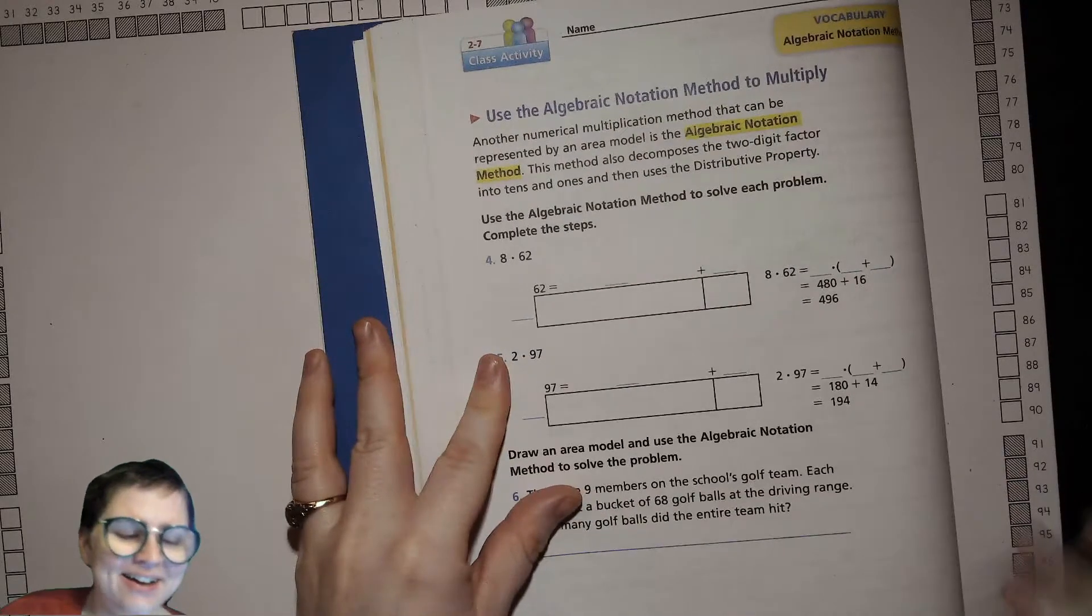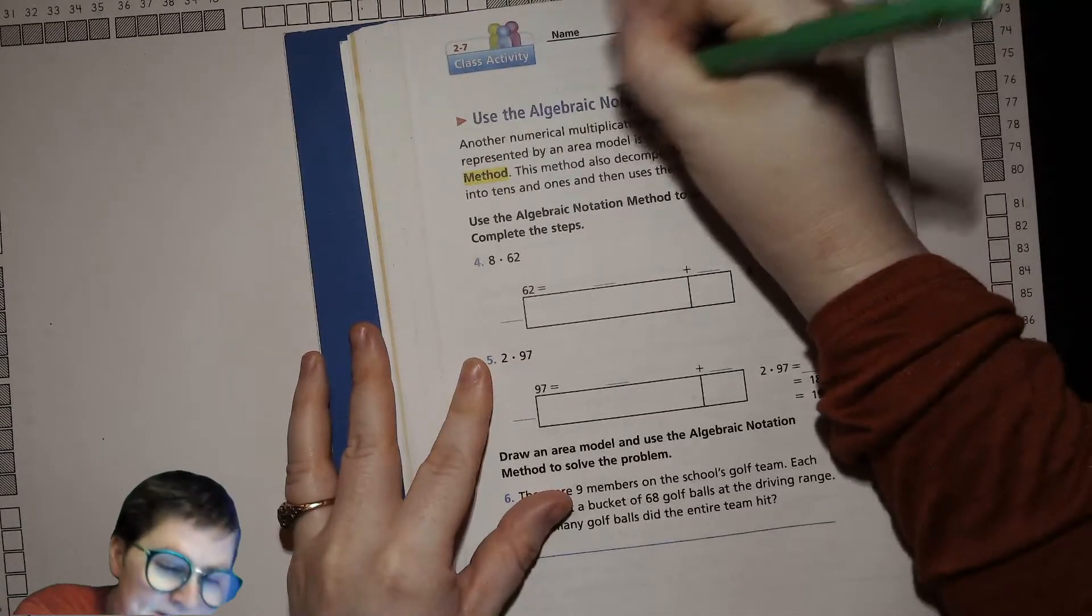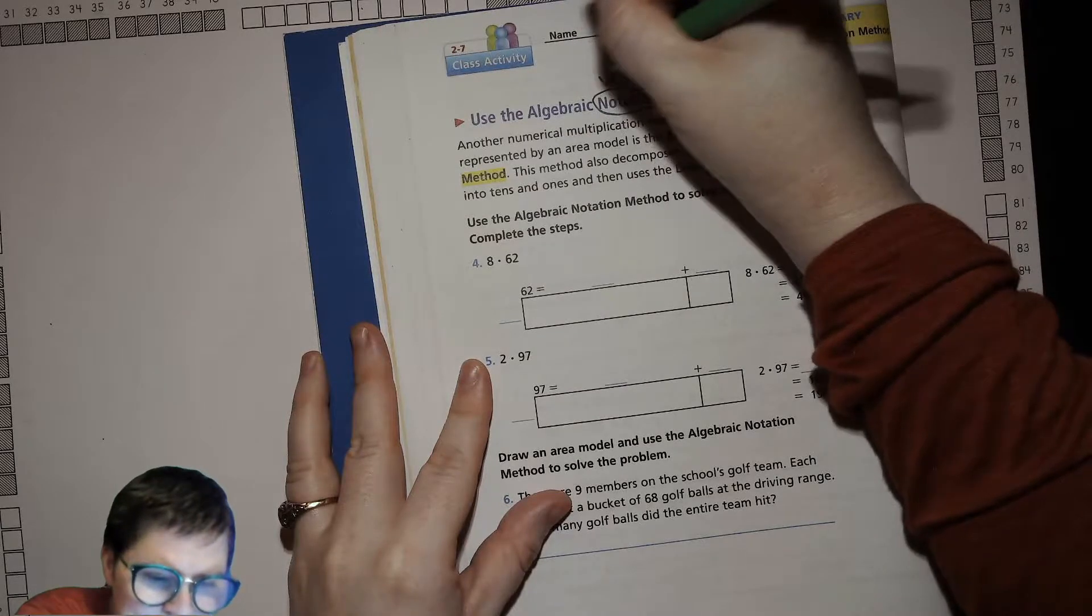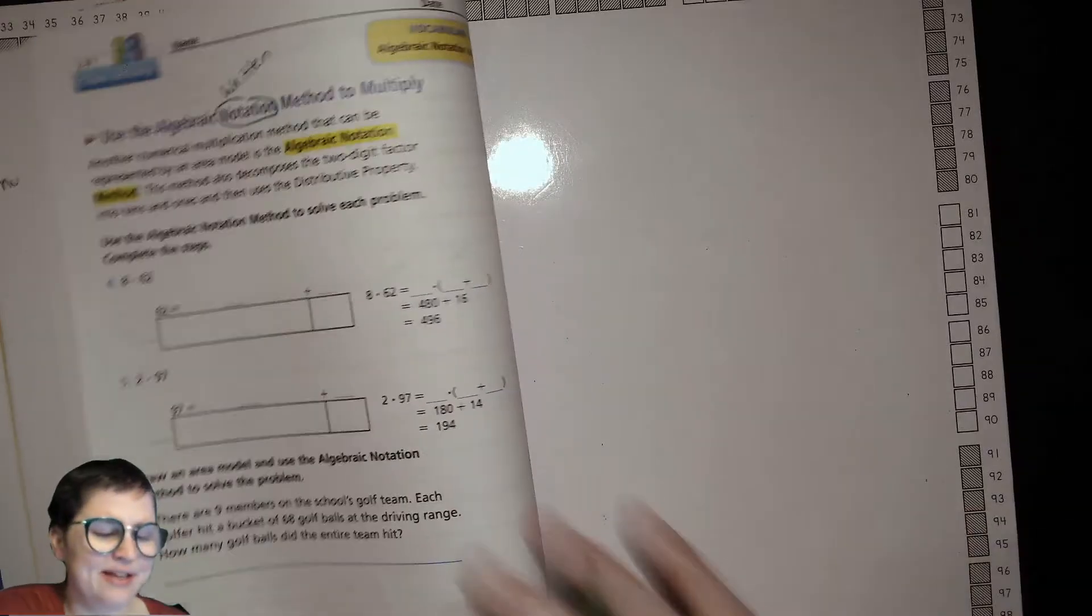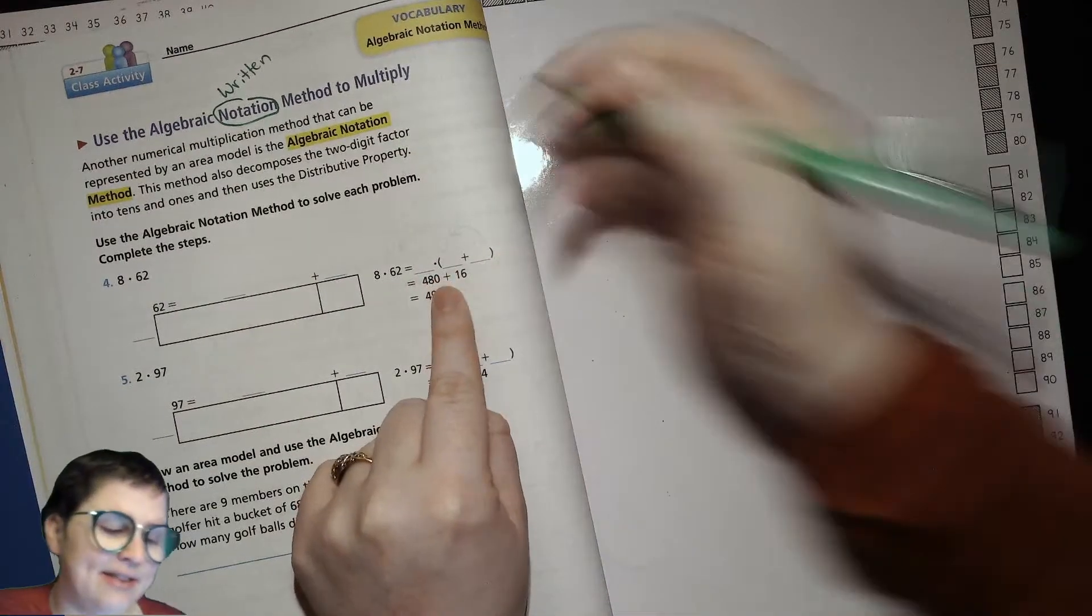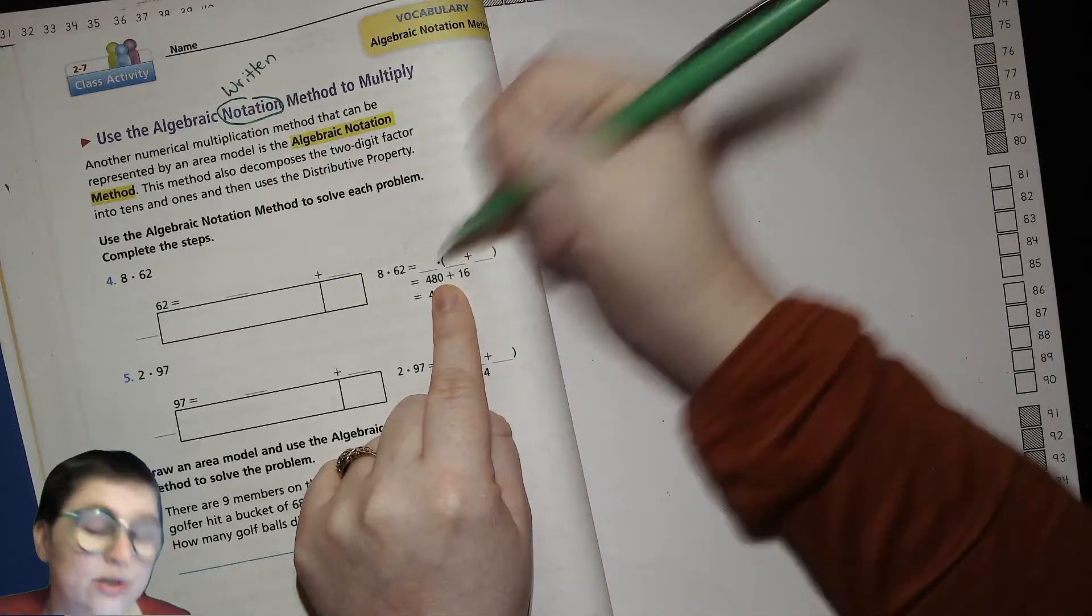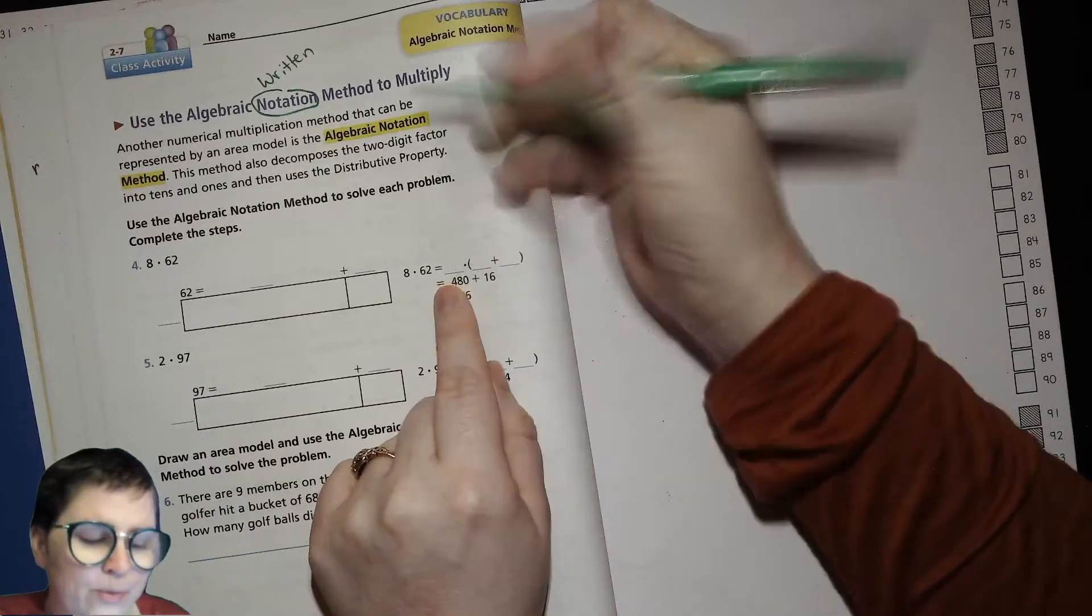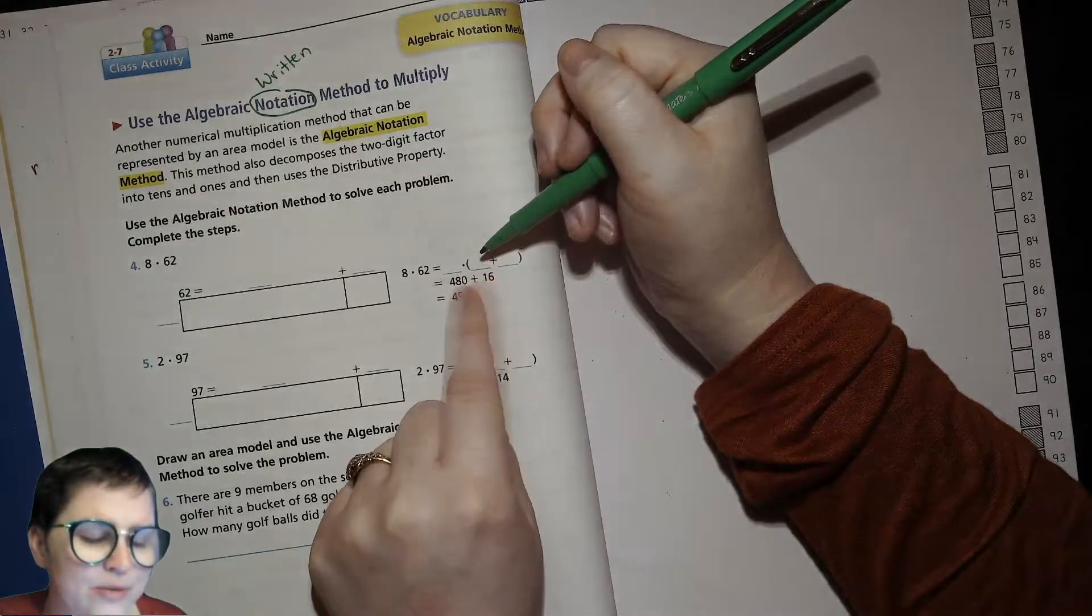Now on this side of the page we're talking about algebraic notation, and this is just notation just means how it's written. This is just talking about a way to write all of these steps that we've done here. You put the expanded form of the number in parentheses, and remember before we talked about it doesn't always have to be that x for multiplying, so here we're using the dot to multiply.